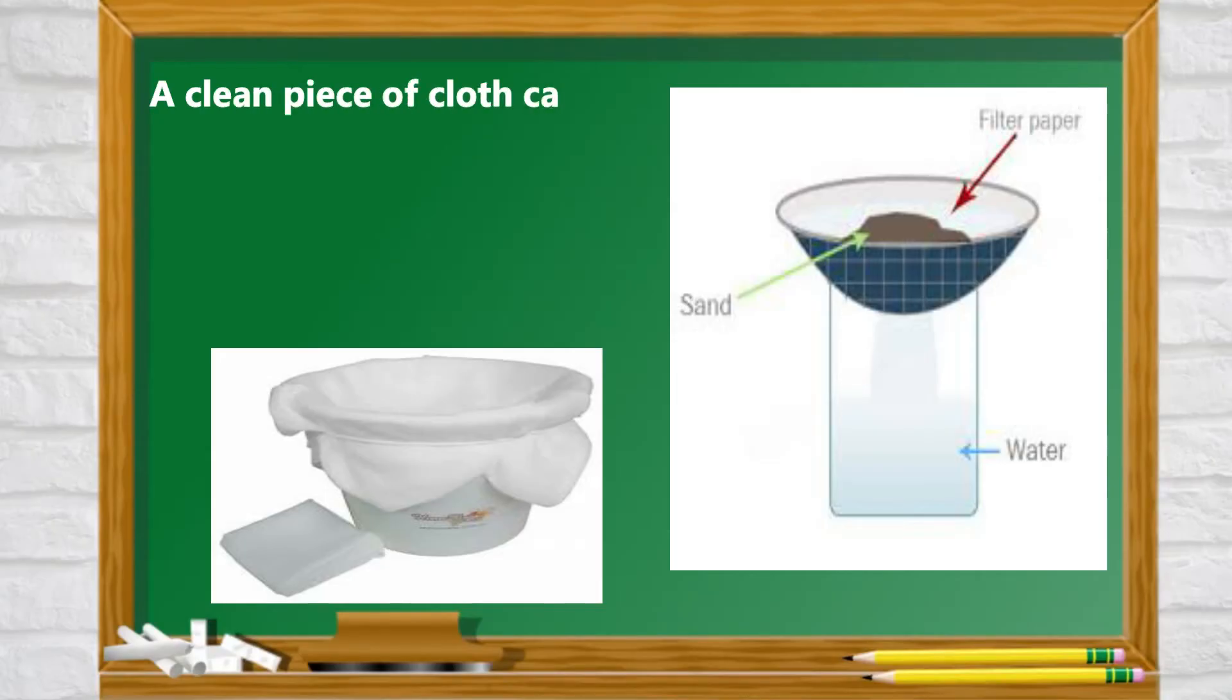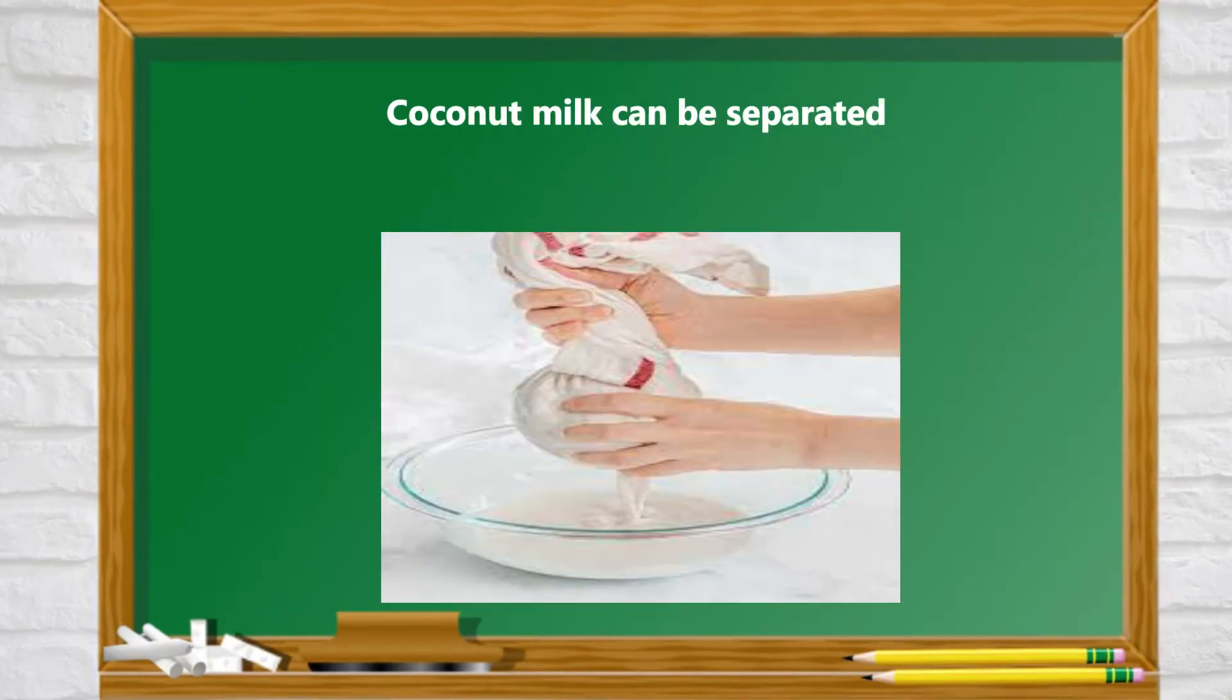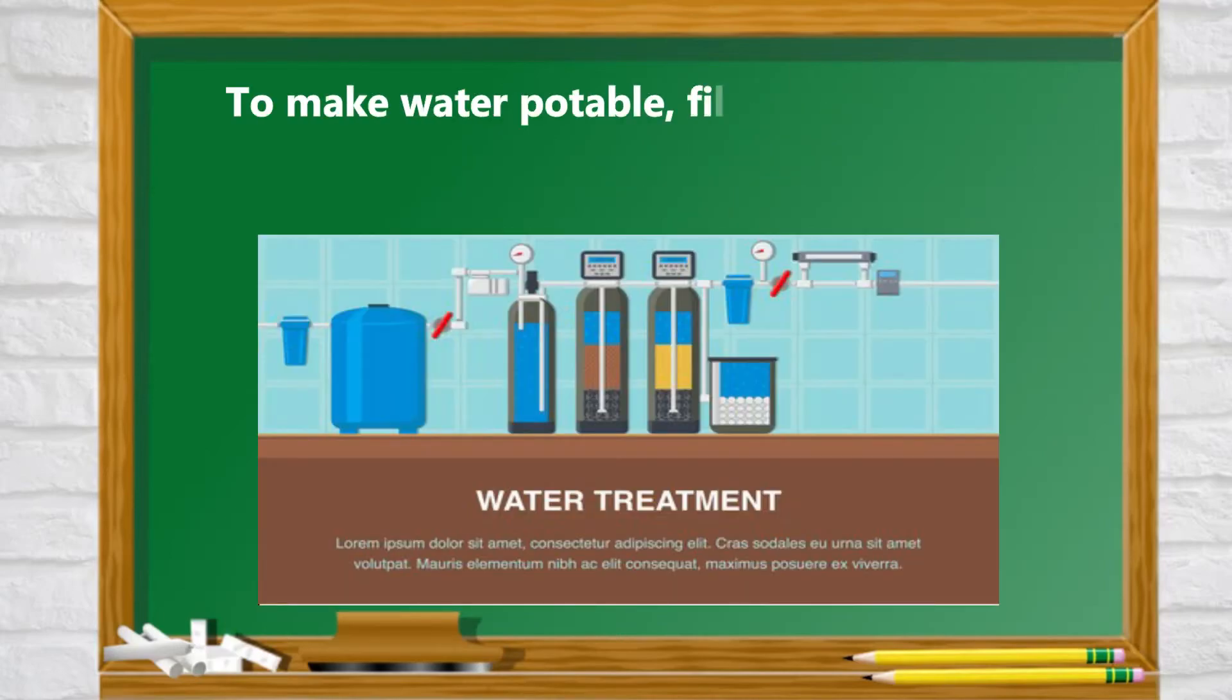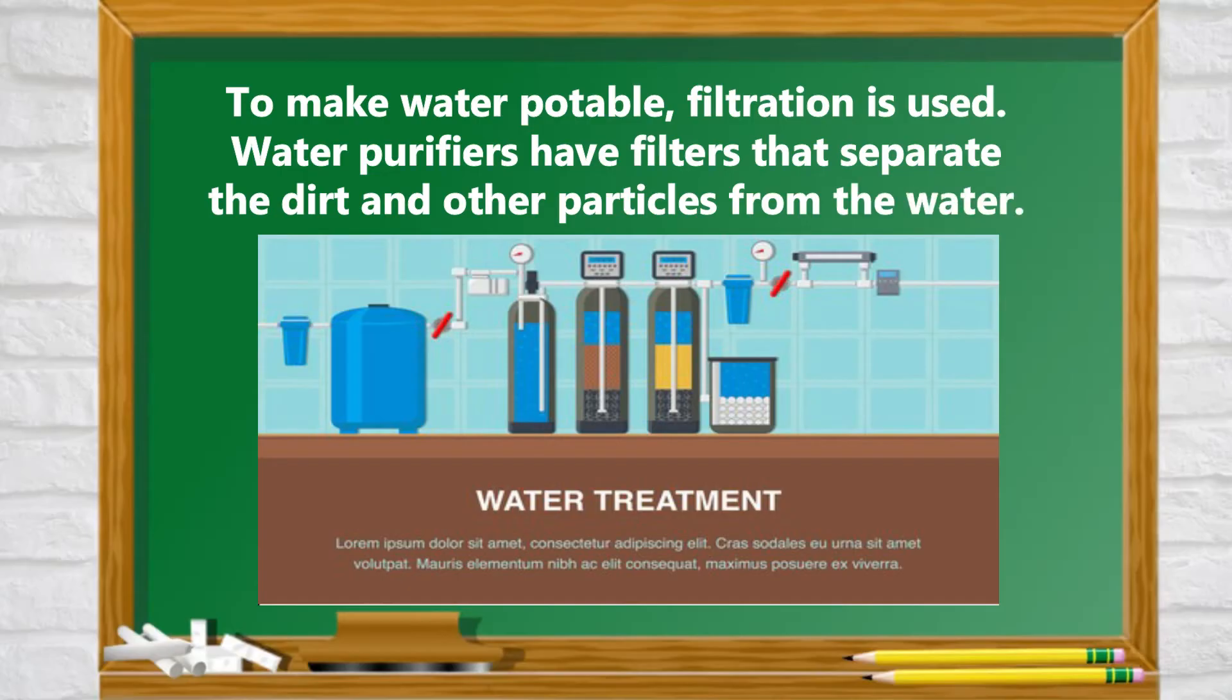A clean piece of cloth can also be used if filter paper is not available. A mixture of sand and water can be filtered using a clean cloth. Coconut milk can be separated from the remains of grated coconut. To make water potable, filtration is also used. Water purifiers have filters that separate the dirt and the particles from the water.